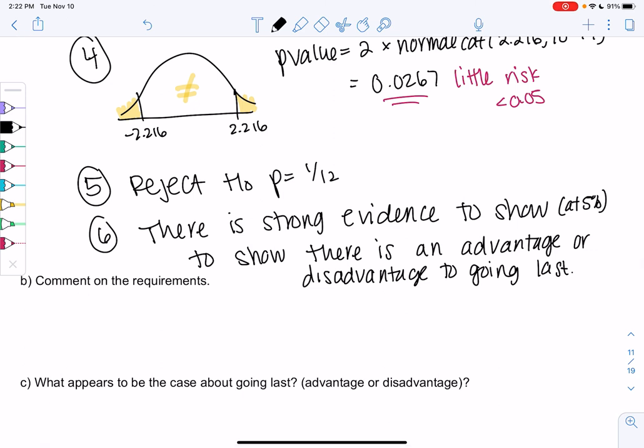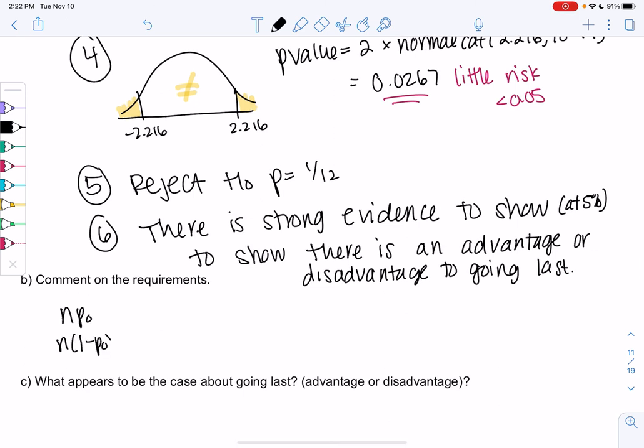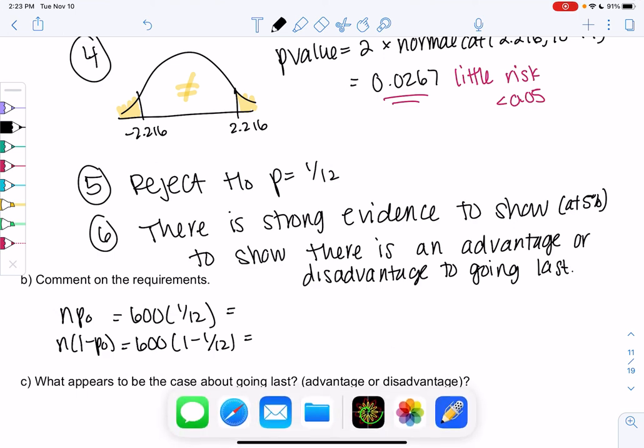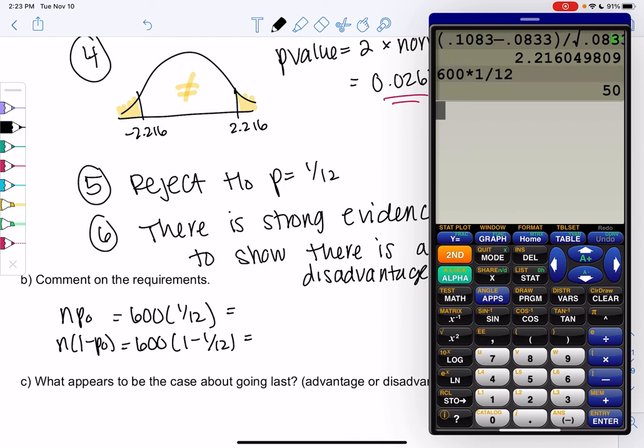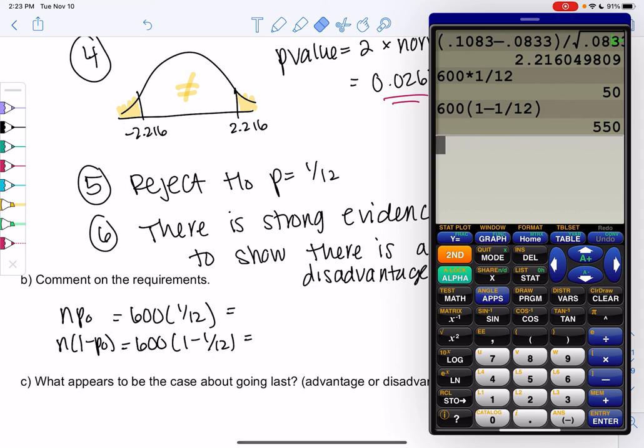All right, we just have two more parts, and then we'll end the video. So the requirements are n times p0, and then n times 1 minus p0. So n was 600, p0 was 1/12. So 1 minus 1/12 will be q. And I get 50, and I get 550. 550, both are well over 10, so the requirements are met.